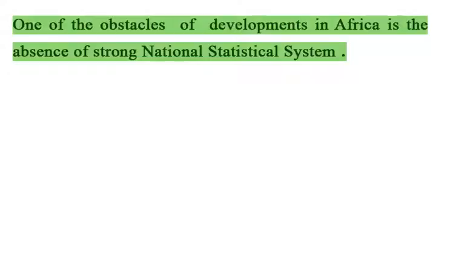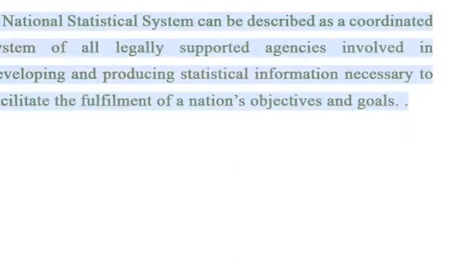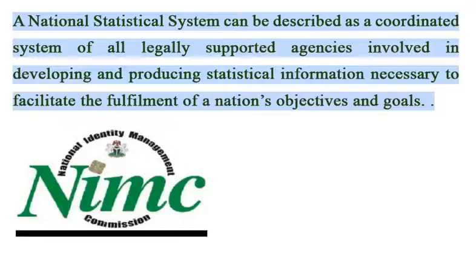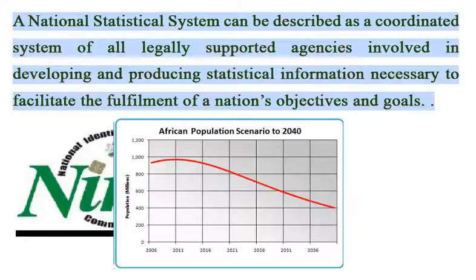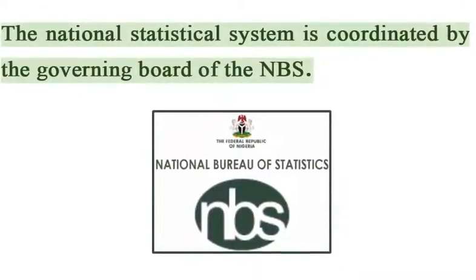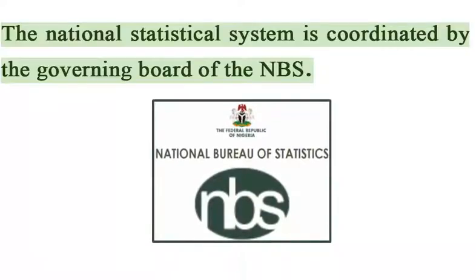One of the obstacles of development in Africa is the absence of a strong national statistical system. A national statistical system can be described as a coordinated system of all legally supported agencies involved in developing and producing statistical information necessary to facilitate the fulfillment of a nation's objectives and goals. The national statistical system is coordinated by the governing board of the NBS.